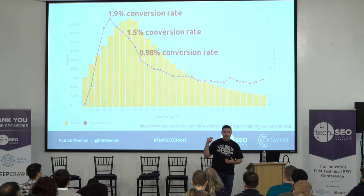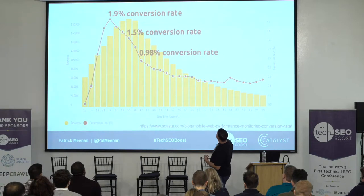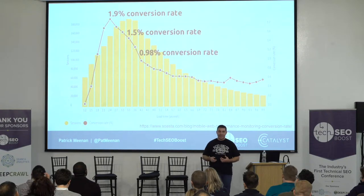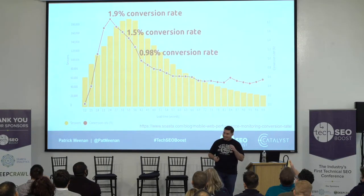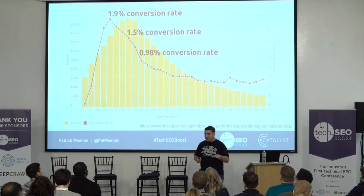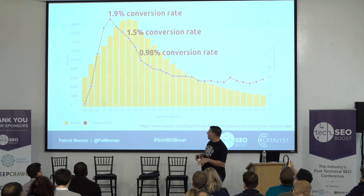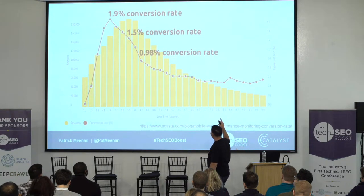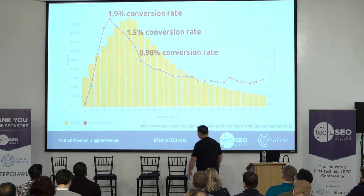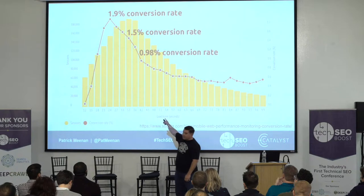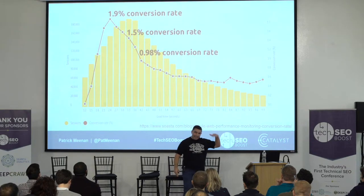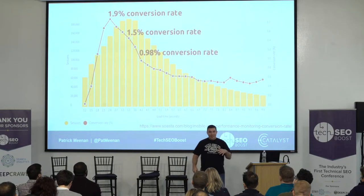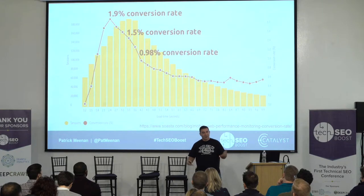Try to push all of your analytics providers to start including performance data with your business metrics, because that's where it matters most. One of the things Soasta is famous for is plotting business metrics against performance metrics so you can see the impact. I've never heard a good explanation for the very far left edge of the curve, where when it gets really fast the conversion rate drops to zero — probably error pages.